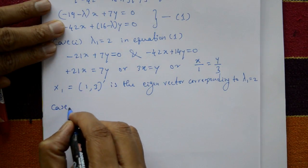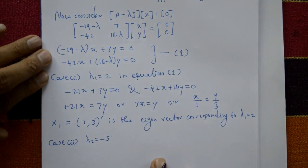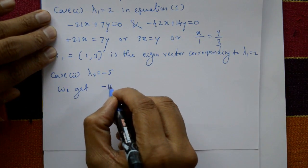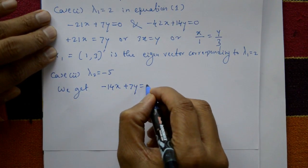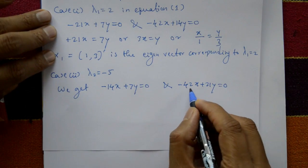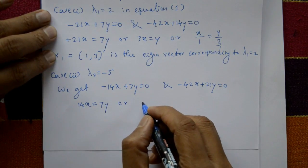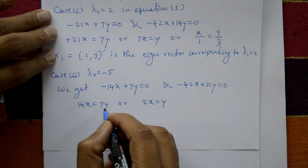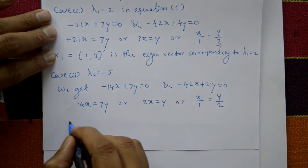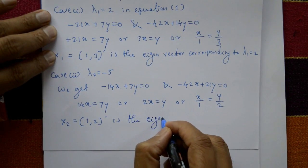Case 2: lambda 2 equals minus 5. Substituting lambda equal to minus 5 gives: minus 14x plus 7y equals 0, and minus 42x plus 21y equals 0. Dividing by 7, we get 2x equals y, or x/1 equals y/2. The second eigenvector x2 is the column matrix [1, 2], corresponding to lambda 2 equal to minus 5.